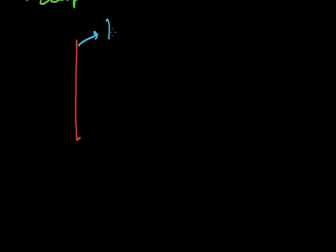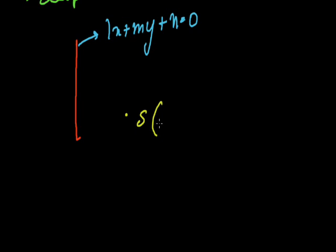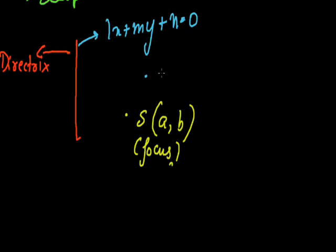Let us take a line — let this line be lx plus my plus n equals to 0 — and let us take a fixed point S whose coordinates are suppose a and b. This line is called the directrix and this point is known as the focus. Now we take any arbitrary point P whose coordinates are h, k. We are going to give some conditions connecting the directrix, the point P, and S such that we get the locus of point P. We draw a line from point P onto the directrix which is perpendicular to the directrix, and also join point P and S.